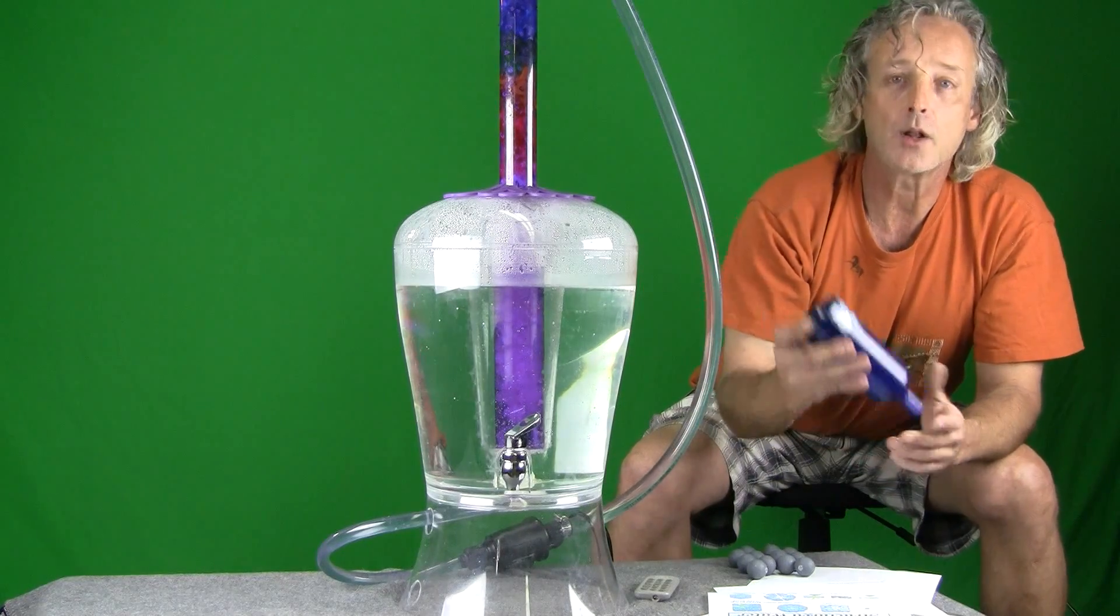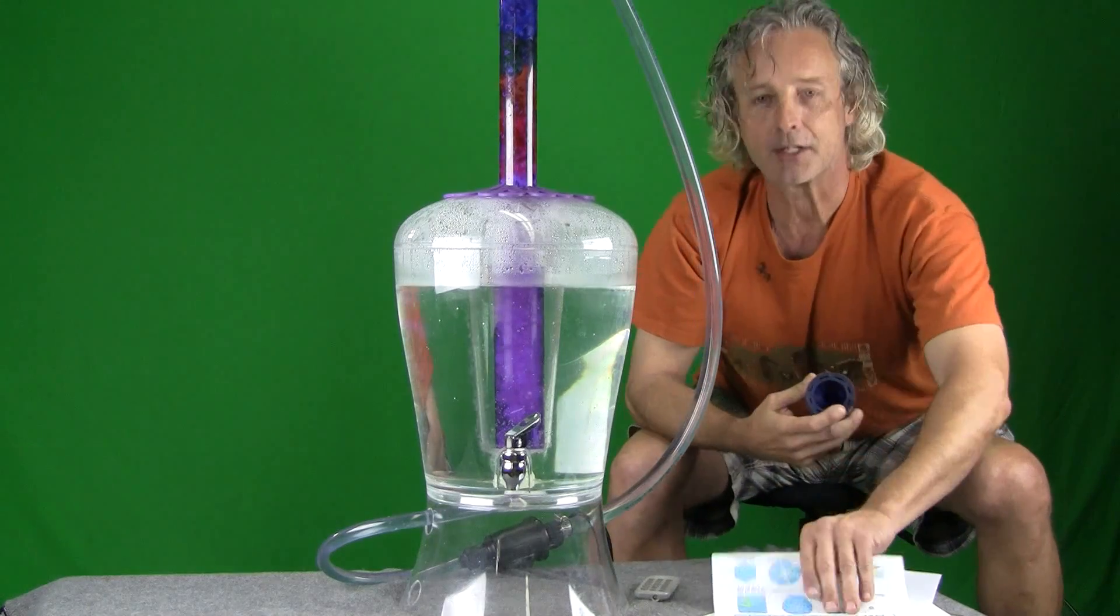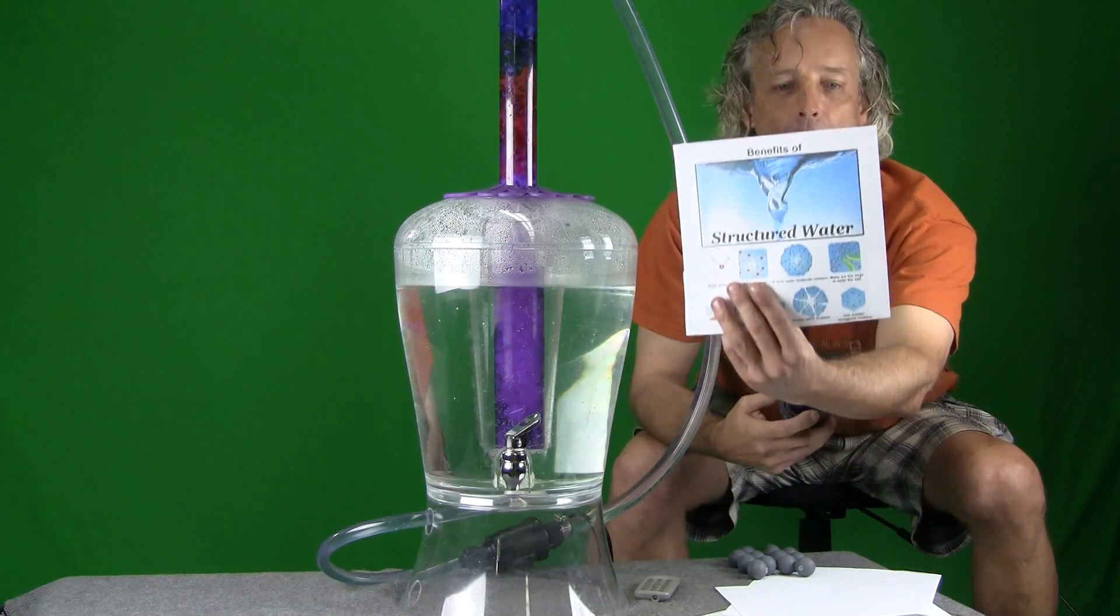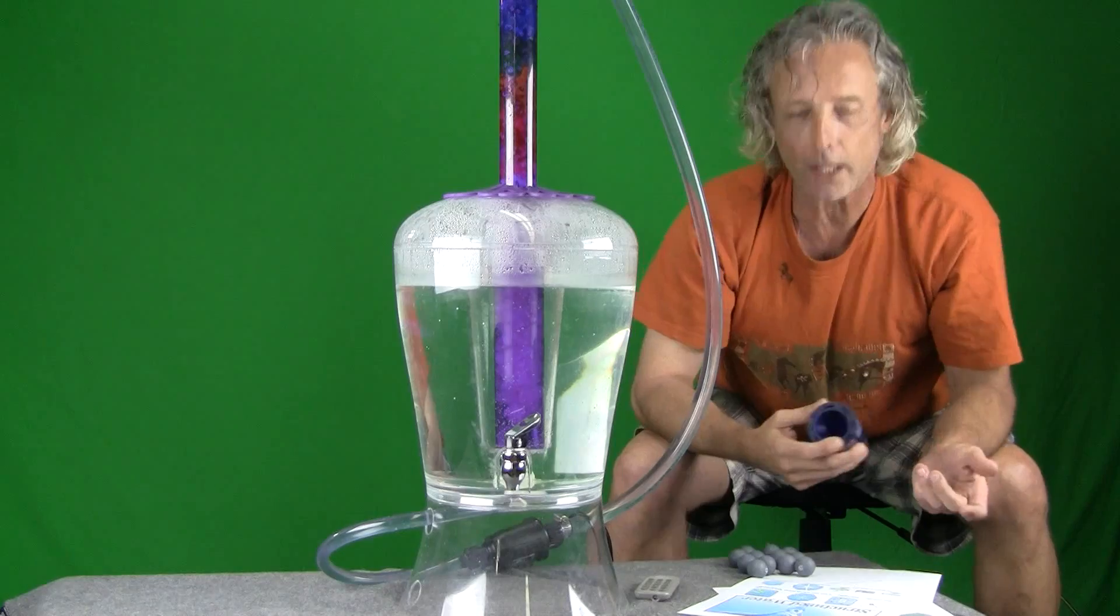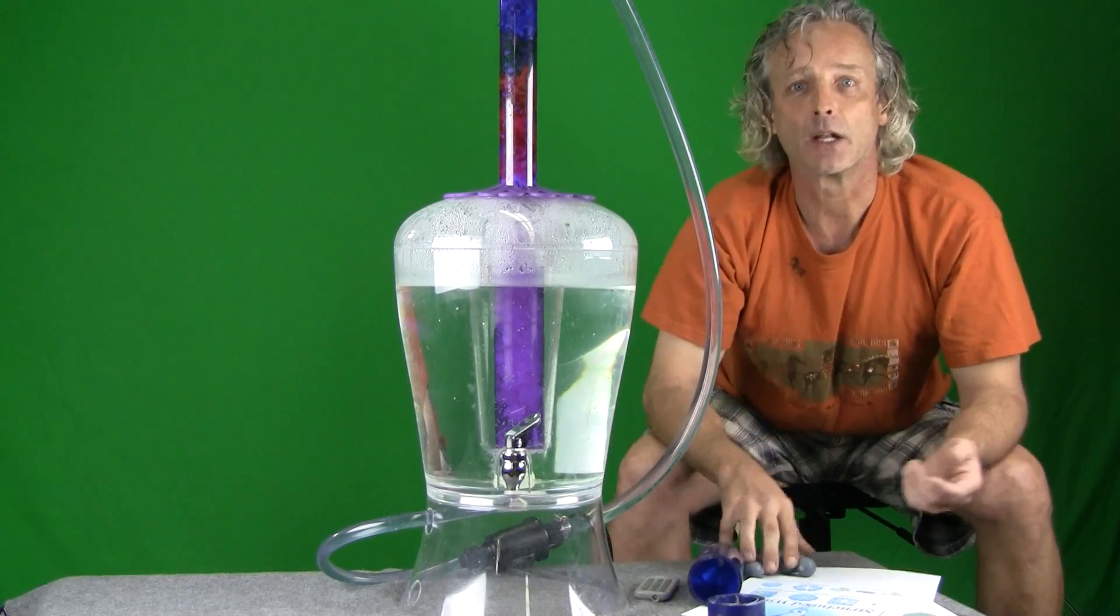So you can buy a $400 piece of plastic tube from them, and it's fine. And it creates some imaginary, physically impossible hexagonal water cluster. So maybe they can explain this to me because I'm kind of at a loss.